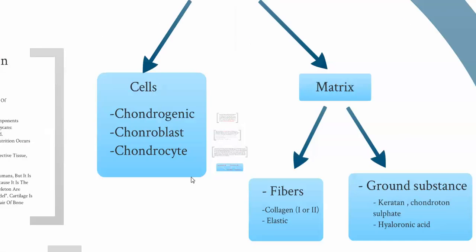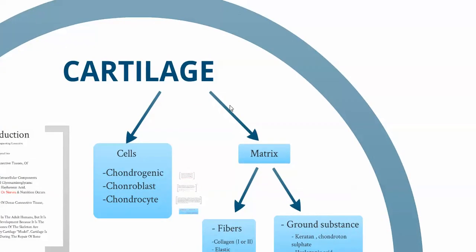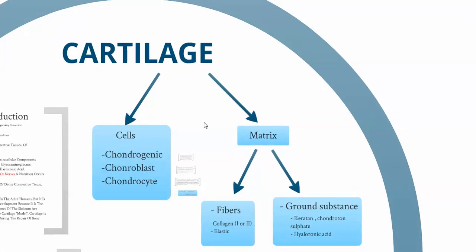The big picture for cartilage: like any other connective tissue, it consists of cells and matrix. We have three types of cells: chondrogenic cells, chondroblasts, and chondrocytes. The matrix is divided into fibers and ground substance.